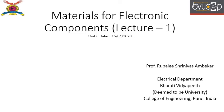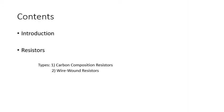Good morning. Today we will start Unit 6: Materials for Electronic Components. This is the first lecture of Unit 6. In lecture 1 we will cover resistors, and in lecture 2 we will cover inductors and capacitors. The design and manufacture of components for electronics has grown to become an industry by itself. The common electronic components are resistors, inductors, condensers (capacitors), transformers, rectifiers, and relays.